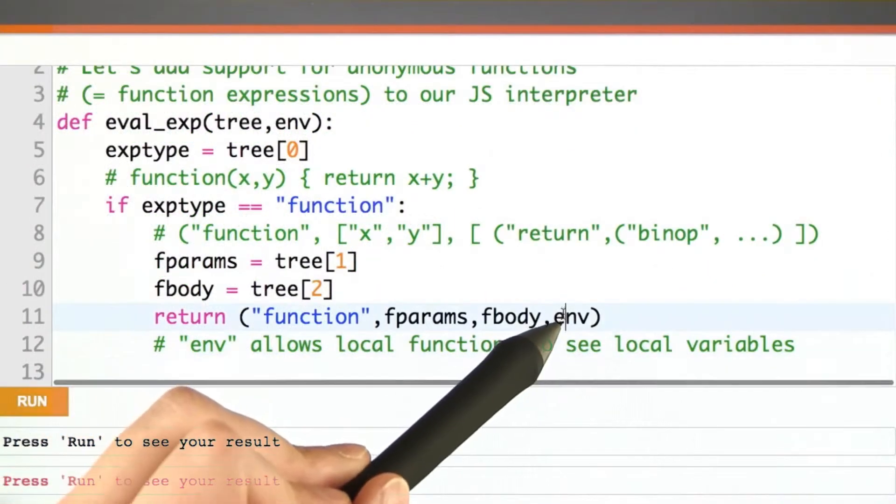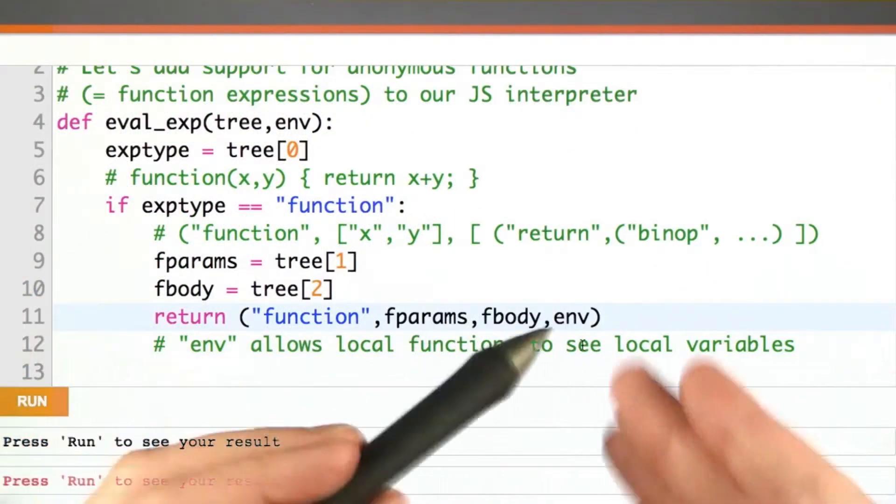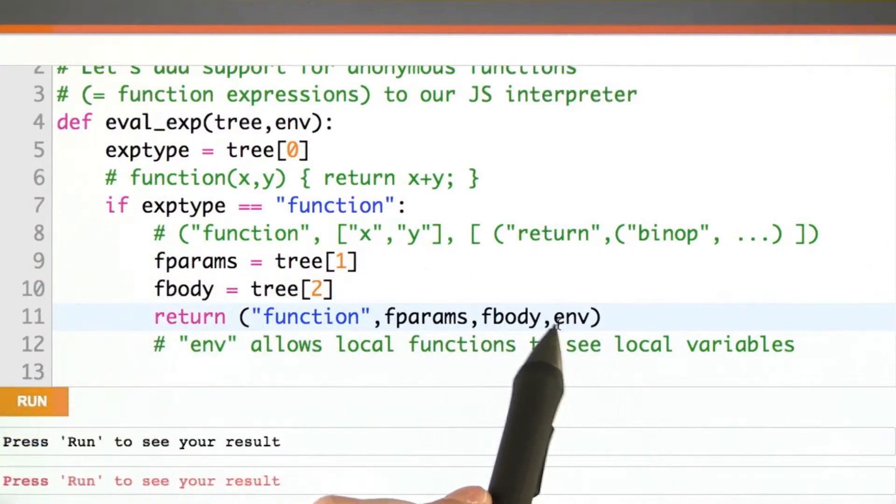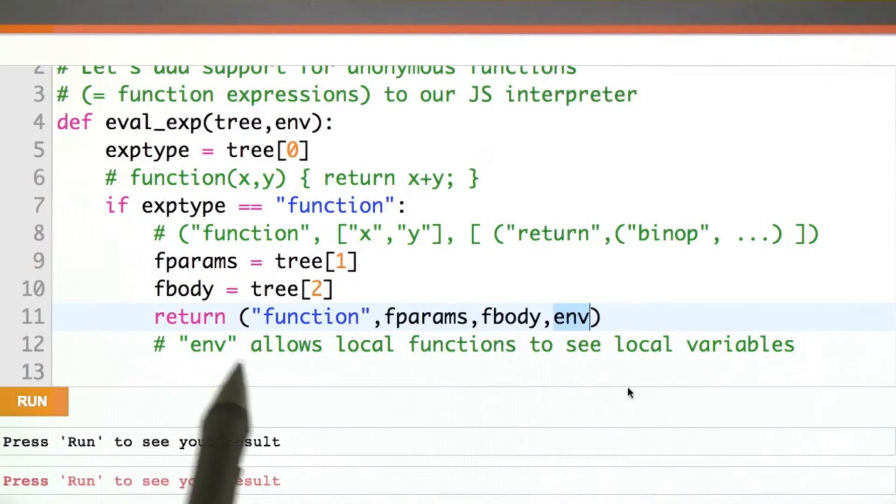And we're passing in env here instead of some global environment or whatnot. And this is what's going to allow local functions to see local variables.